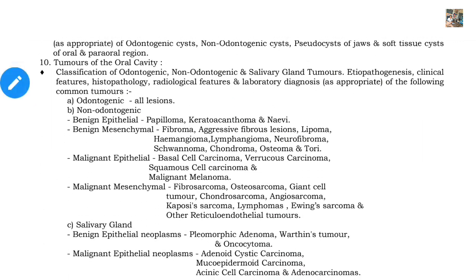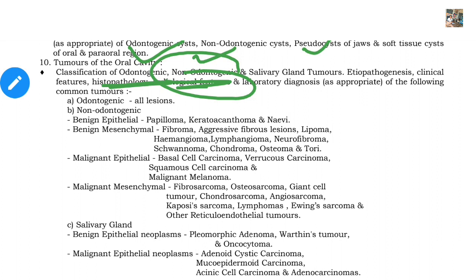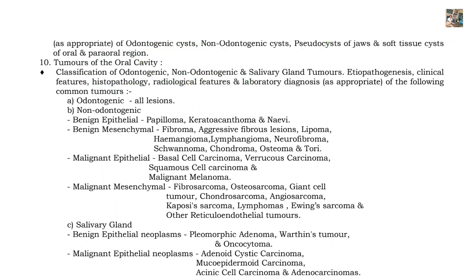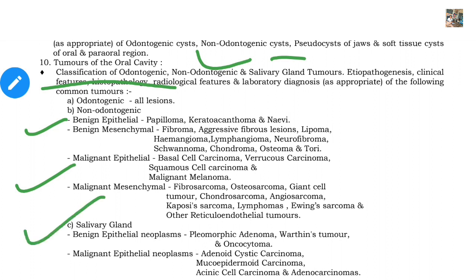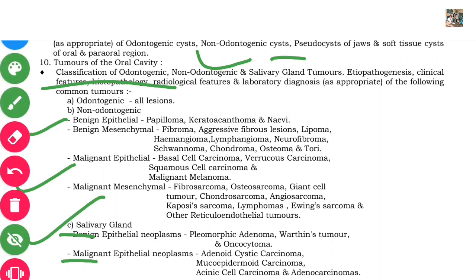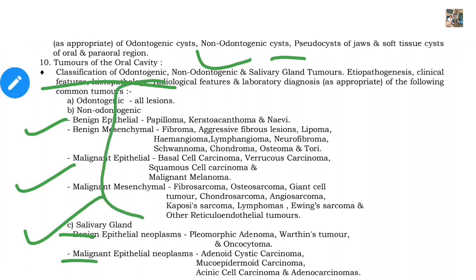The next topic is tumors of the oral cavity — either odontogenic origin (from teeth), non-odontogenic (from mucosa, fibers, tongue, gingiva, etc.), or salivary gland tumors. First, memorize the classification of odontogenic, non-odontogenic, and salivary gland tumors — with benign and malignant separately for each. Then for all tumors, write the same 9 headings mentioned earlier.